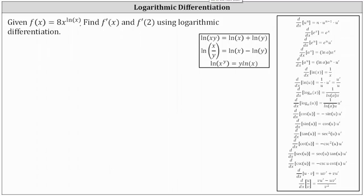We are given f of x equals eight times x to the power of natural log x, and asked to find f prime of x and f prime of two using logarithmic differentiation. Let's begin by replacing f of x with y and writing the given function as y equals eight times x to the power of natural log x. Note that the exponent of natural log x is only attached to the x, not the eight.